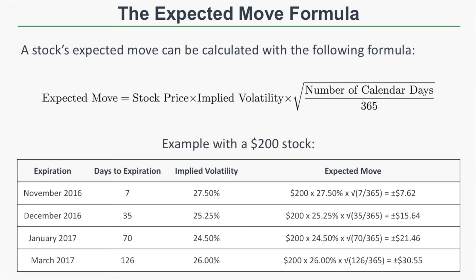So let's calculate some expected moves. The expected move formula is the stock price times implied volatility times the square root of the number of days to expiration over 365. If you're using trading days, change the number of calendar days to trading days and change the denominator from 365 to 252, since there are 252 trading days in a year. Both calculations will give you roughly the same number, so it doesn't matter which one you use — just be consistent.